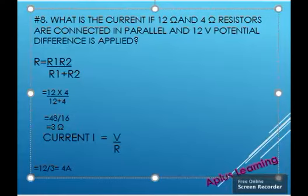Here we have R1 as 12 ohm and R2 as 4 ohms. So, while substituting it, we get it as 12 multiplied by 4 divided by 12 plus 4. That is equal to 48 by 16. You get the answer as 3 ohm.